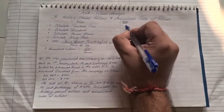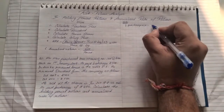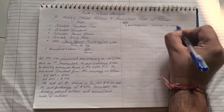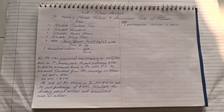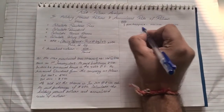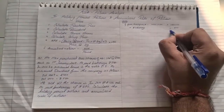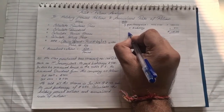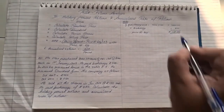Step one: calculate the purchase price. Mr. Max purchased 1000 shares at rupees 100 each, so that comes to rupees 1 lakh. He also paid rupees 500 as brokerage — on the purchase we always add brokerage — so we add rupees 500. Total purchase price is rupees 1,00,500. This is also known as the price at the beginning.